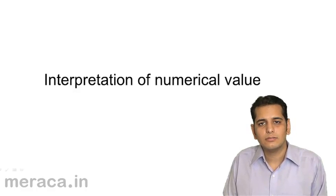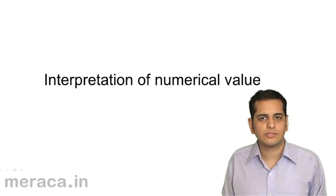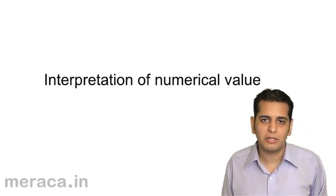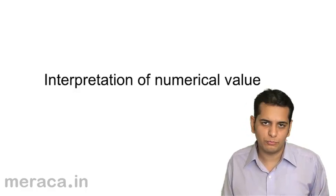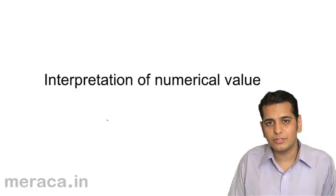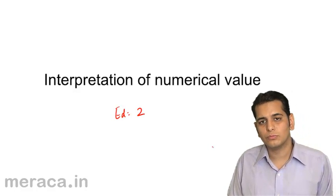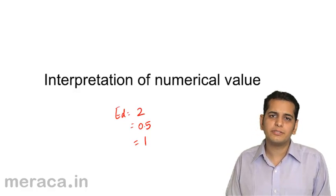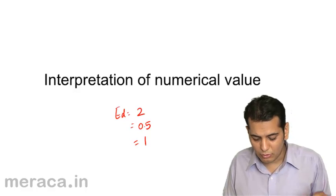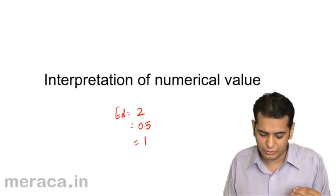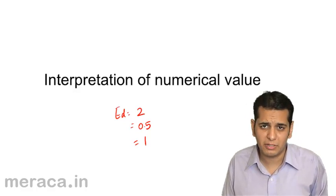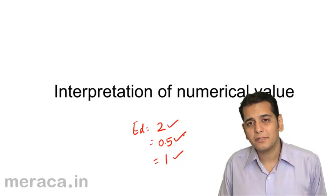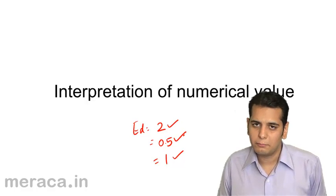We have seen the methods to find out elasticity of demand. Now let's understand what the numbers in elasticity of demand mean. What meaning do we derive from those numbers? Let's say the elasticity of demand is 2, or 0.5, or 1. How do I interpret these numbers? Before understanding these numerical values, it is imperative to understand the types of price elasticity of demand.